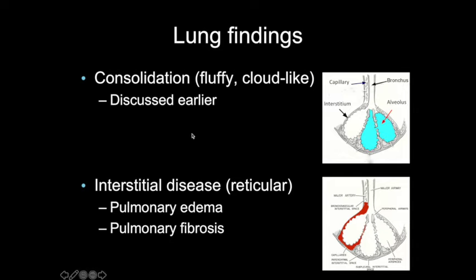Consolidation means the alveoli are filled with some form of disease — most commonly pneumonia and hemorrhage in the acute setting. Another pattern is interstitial disease, which causes a reticular pattern on x-ray — instead of filling the alveoli, there's an abnormality involving the interstitium itself. In the acute setting you most commonly see this with pulmonary edema — fluid leaking into and thickening the interstitium. In the chronic setting, you most commonly see it with pulmonary fibrosis.